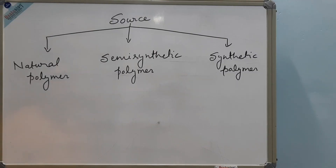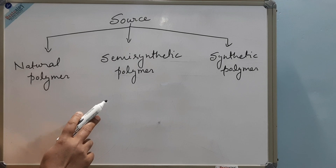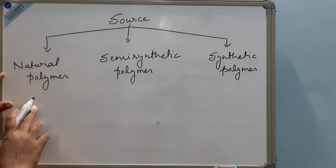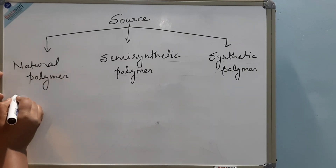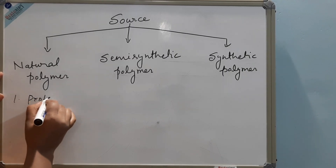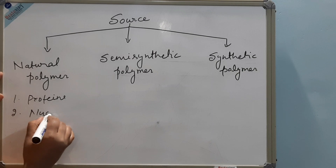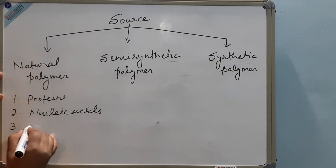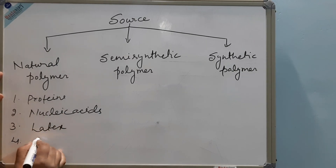As per source, polymers are categorized into three types: natural polymers, semi-synthetic polymers, and synthetic polymers. Natural polymers are those which are present in our environment naturally — examples include proteins in the human body, nucleic acids, and latex and cellulose found in plants.